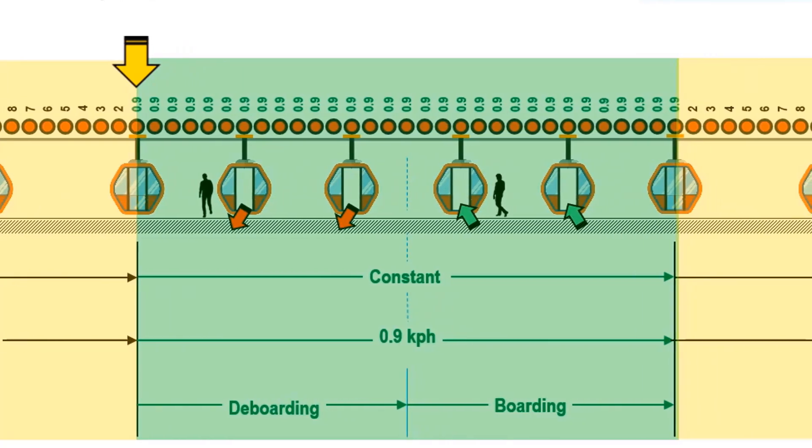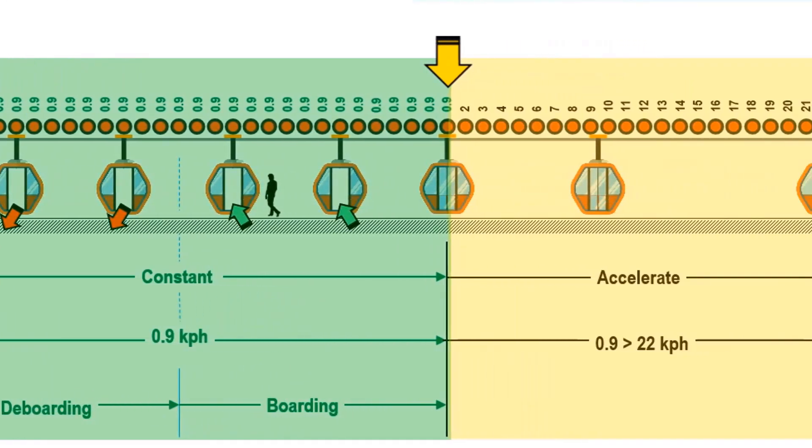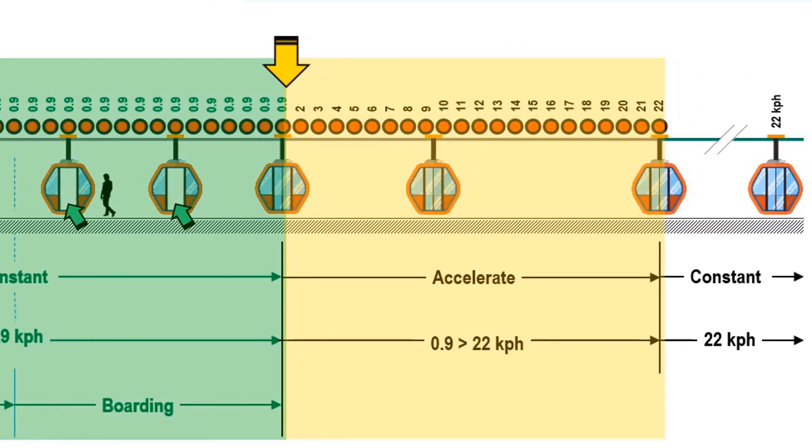At this point, the speed of the cabin is 0.9 kph, which is the safe speed for deboarding and boarding of passengers. This speed will be made constant within the range of the deboarding and boarding area. This constant speed is done by assigning a rotational speed of each conveyor at 0.9 kph. At this point, boarding is no longer allowed as the cabin will start to be accelerated. The acceleration is done by increasing the rotational speed of each conveyor at an increment of 1 kph. At this point, the cable takes over the propulsion of 22 kph.